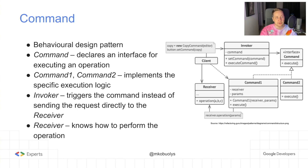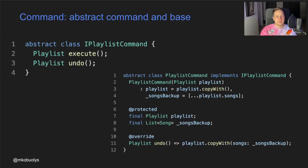To implement this design pattern, a common command interface is defined and concrete commands are created to implement specific execution logic. Then the invoker triggers the command instead of sending the request directly to the receiver, meaning the client code does not operate on the state directly — standalone separate commands are used instead. The receiver knows how to perform the operation and contains the state we want to mutate. In the example app we have three different commands applied on the playlist: add a song, remove a song, and reorder songs.